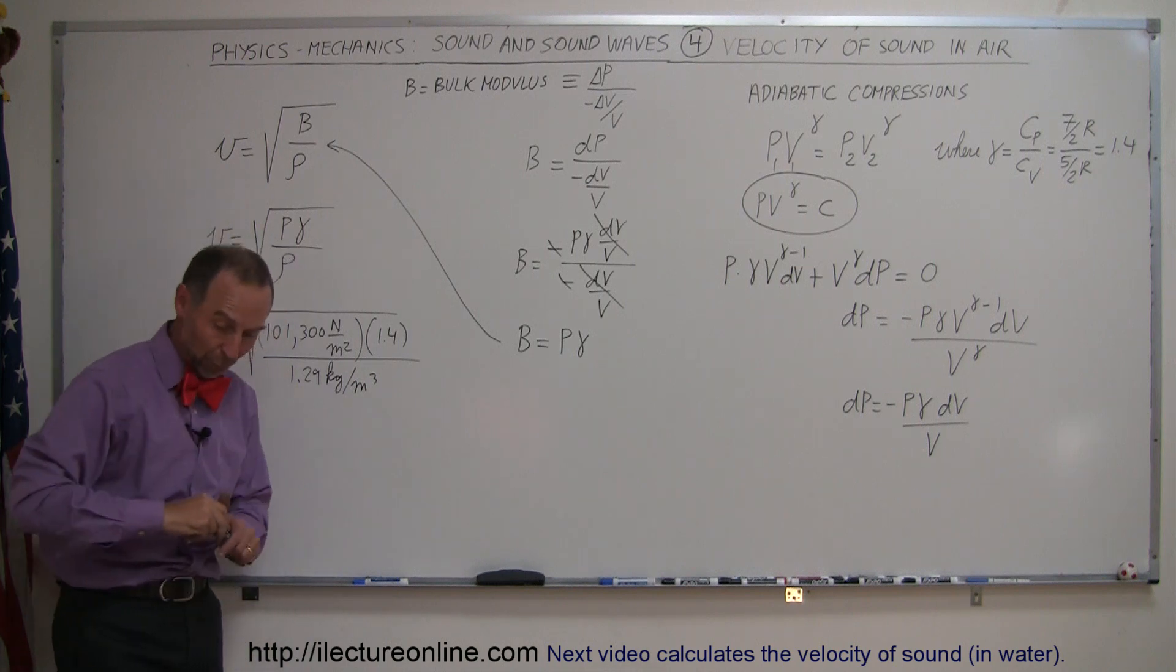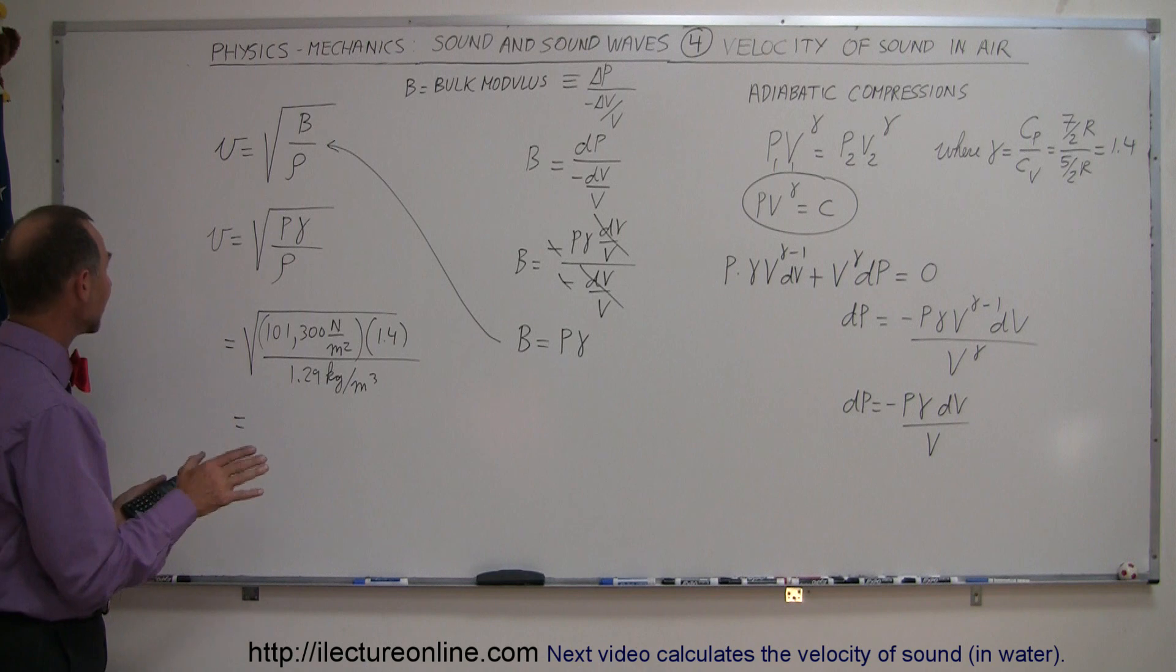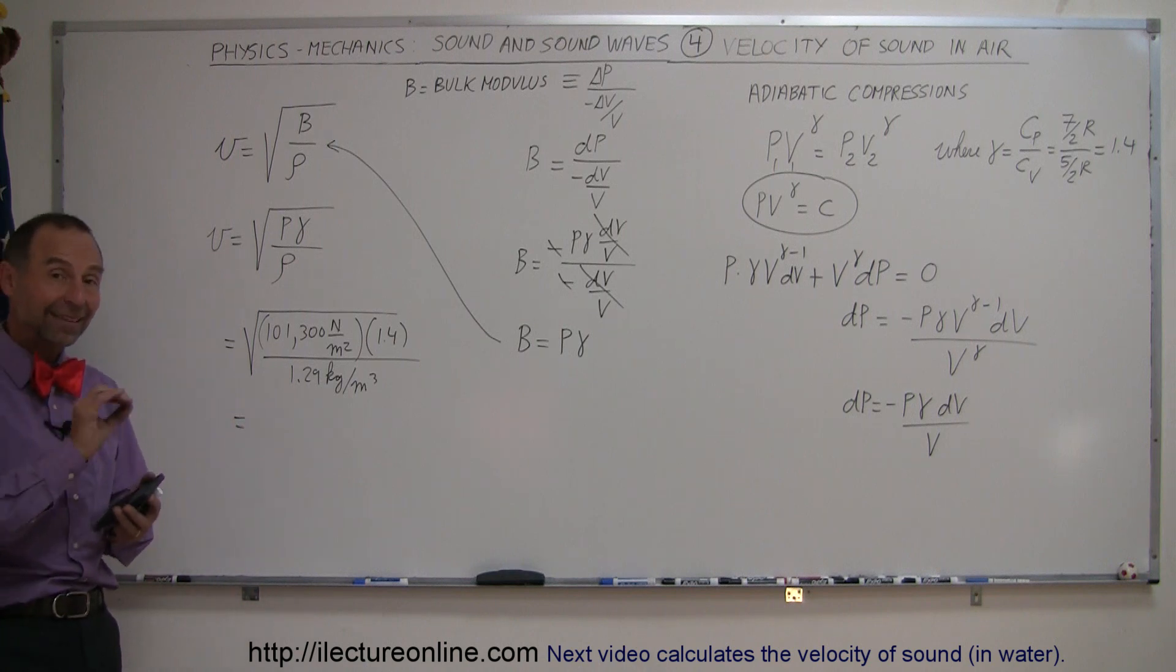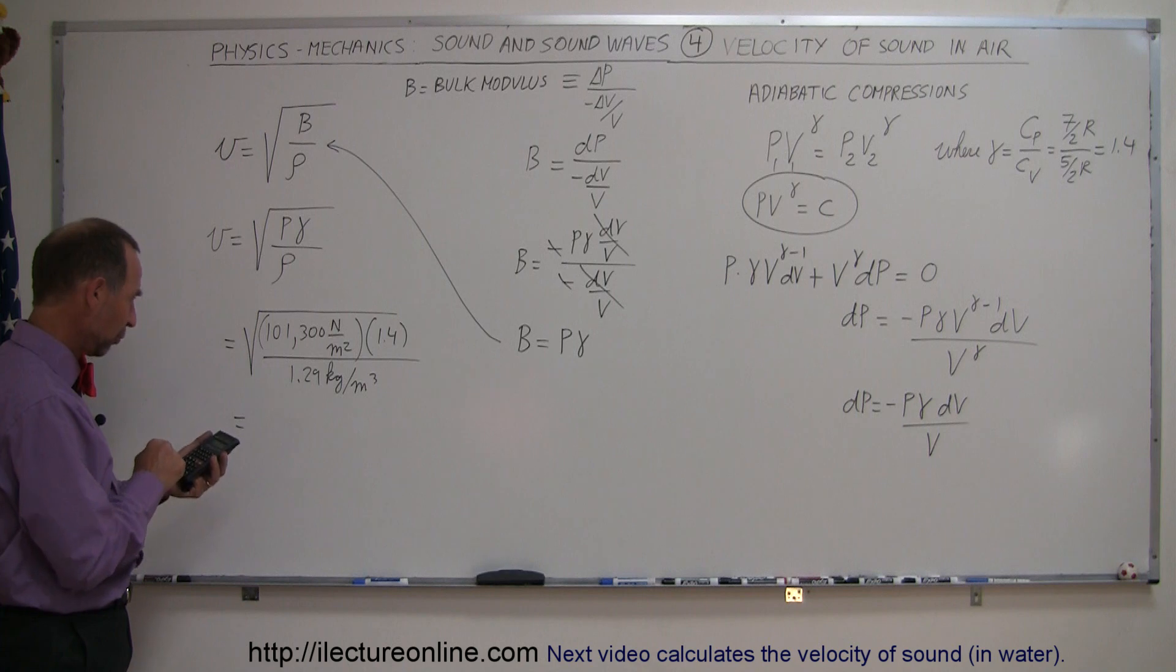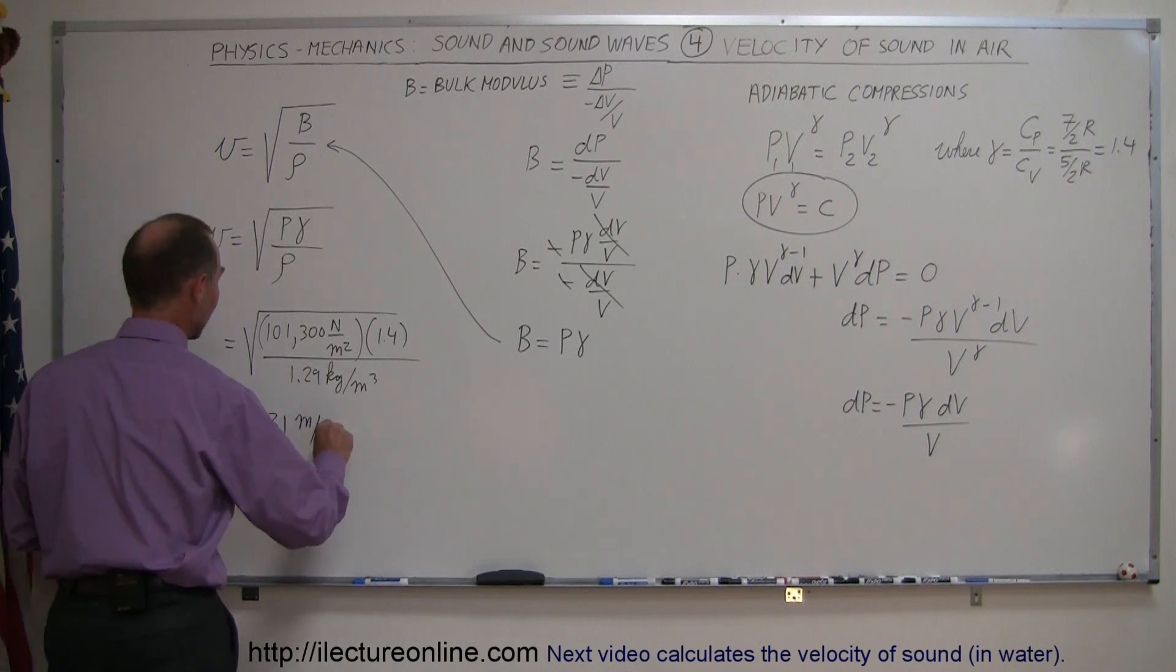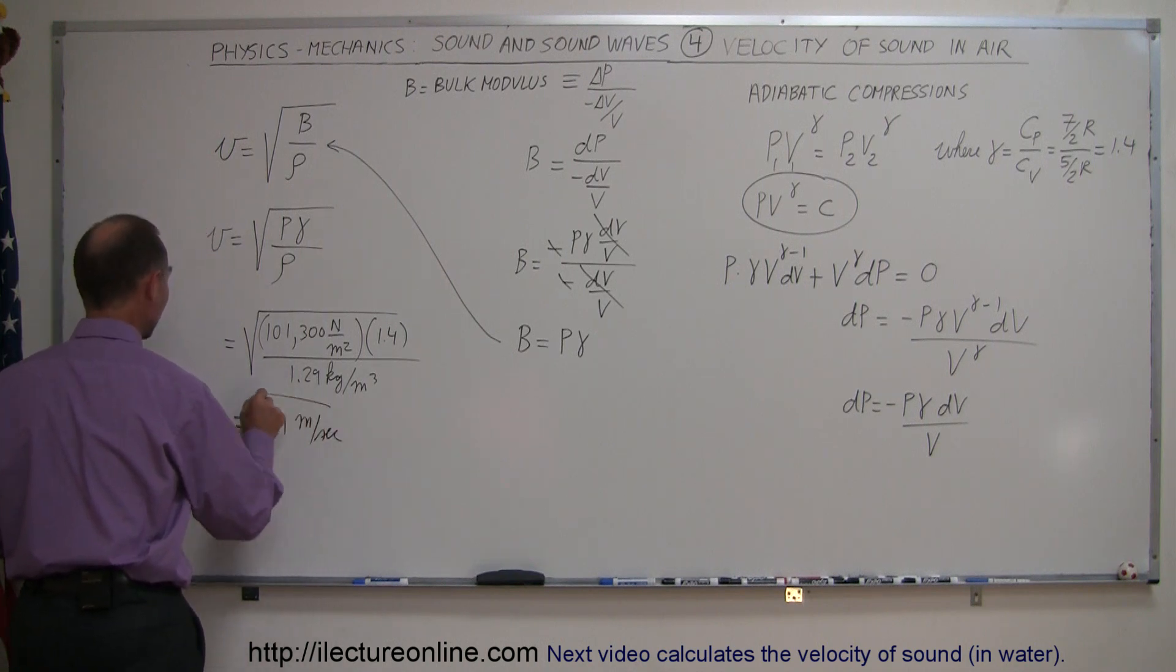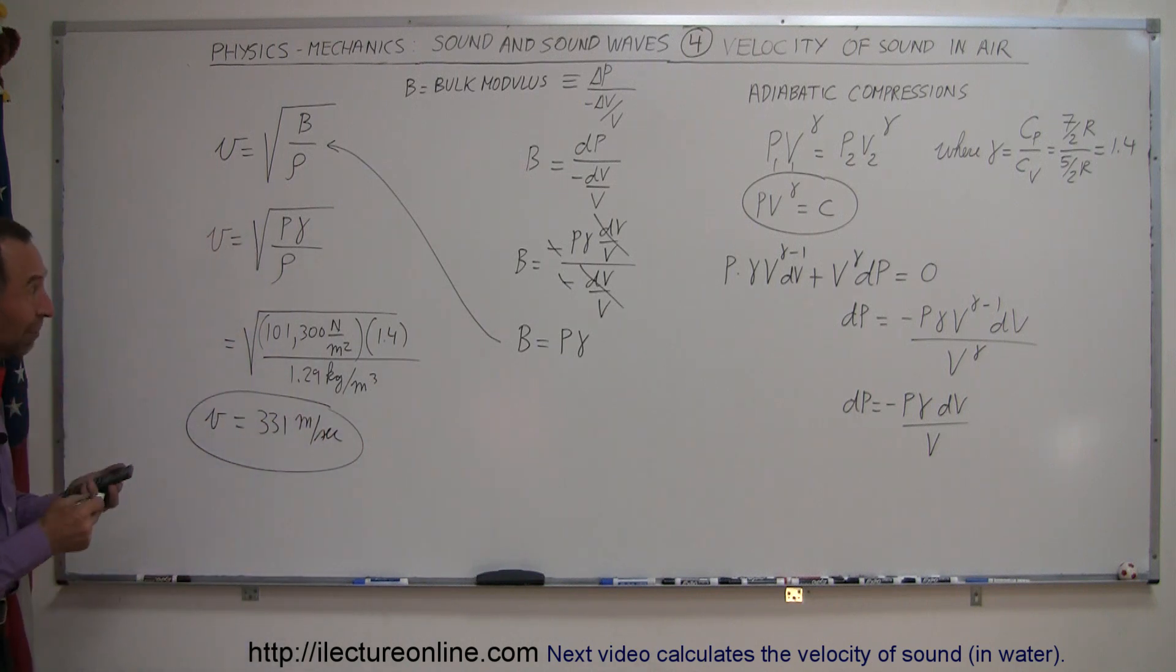Let's see what we get when we use a calculator to find the speed of sound in air. Considering that this is an STP condition, standard temperature and pressure, that's zero degrees centigrade in one atmosphere, we have 101,300 times 1.4 divided by 1.29, take the square root, and I get 331 meters per second, which is the number that we used in our previous video, but now at least you see where that came from.